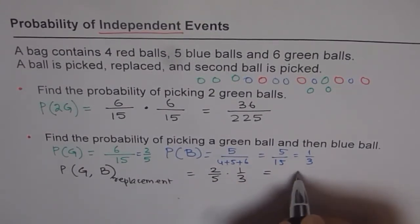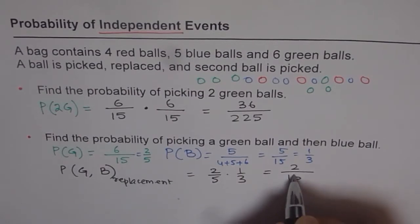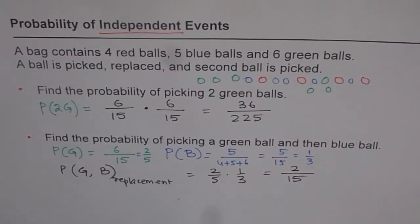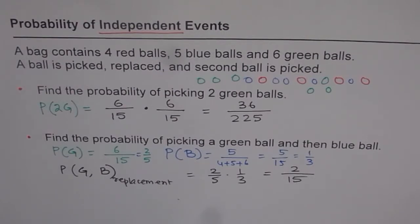That gives us 2 × 1 = 2 and 5 × 3 = 15, so the answer is 2/15. That is the probability of picking a green ball and then a blue ball. These are independent events. If you reverse the order, the answer remains the same for independent events. But if we are not replacing, we will get different answers — those become compound events which are dependent. We will see compound dependent events in the next example. Thank you and all the best.